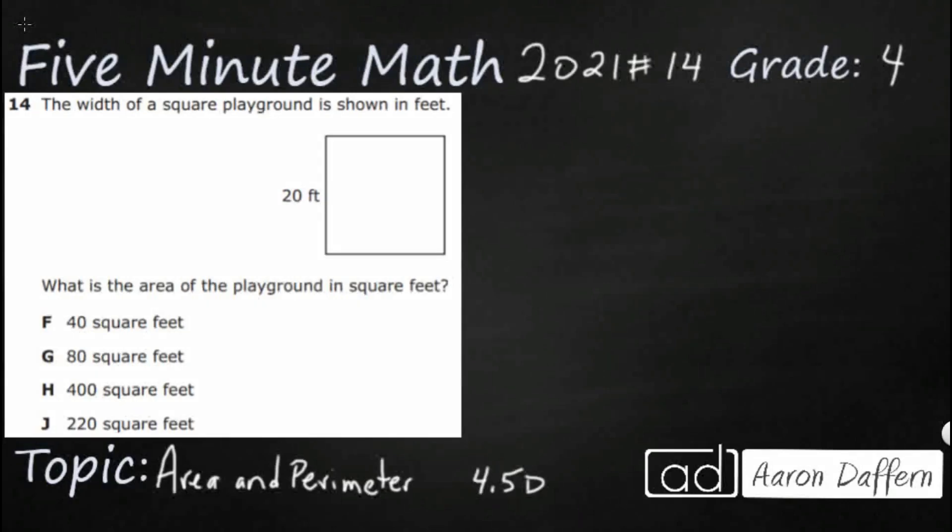Hello and welcome to 5-Minute Math. Today we are looking at the fourth grade concept of area and perimeter. This is standard 4.5D in the great state of Texas and we are using item number 14 off the 2021 released STAR test.